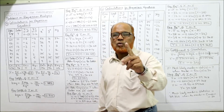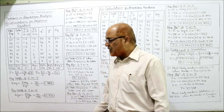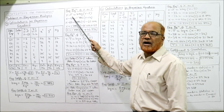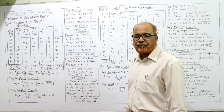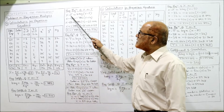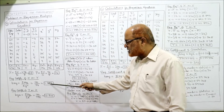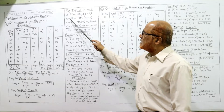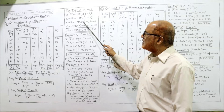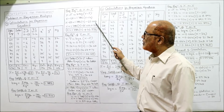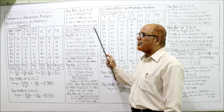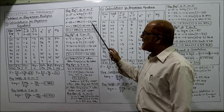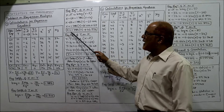Now the regression equation of X on Y: X minus X bar equals BXY times (Y minus Y bar). With X bar equal to 68 and BXY equal to 1.786: X minus 68 equals 1.786 times (Y minus 14). Opening the bracket: X minus 68 equals 1.786Y minus 1.786 times 14, which is 25.004. Bringing minus 68 to the RHS gives X equals 1.786Y minus 25.004 plus 68, so X equals 1.786Y plus 42.996. This is the regression equation of X on Y.